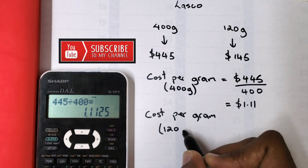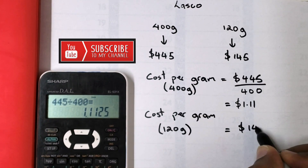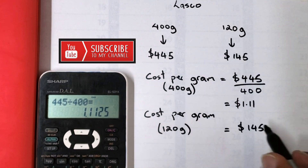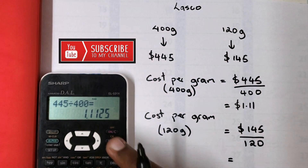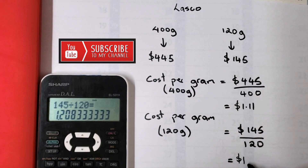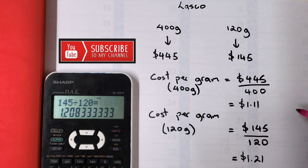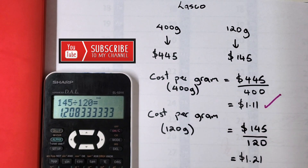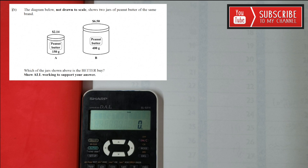Now for the 120-gram packet — the total cost was $145. Dividing that by 120 grams and rounding to two decimal places, I get $1.21 per gram. Just be reminded that on your final exam you might need to go to extra decimal places for security. Looking at this, the better buy is clearly the 400-gram packet at $1.11 per gram, saving you an extra 10 cents per gram.